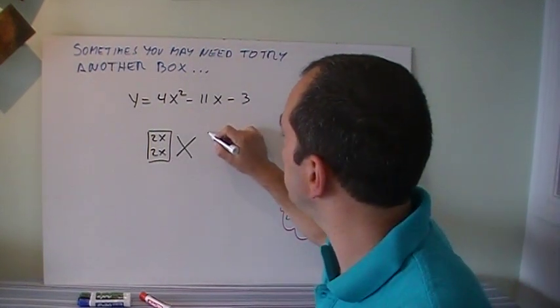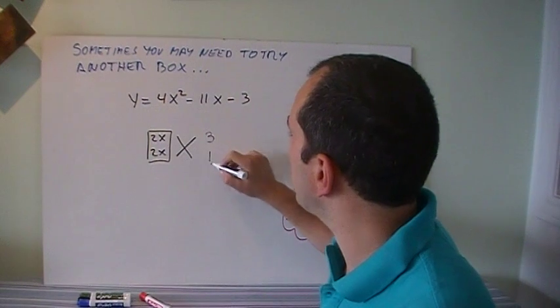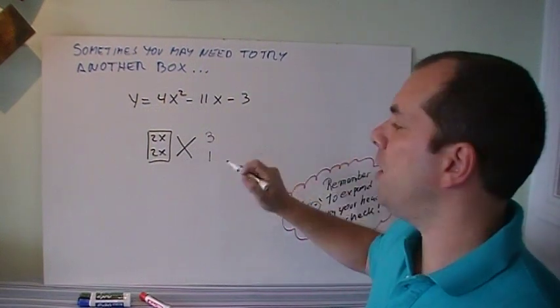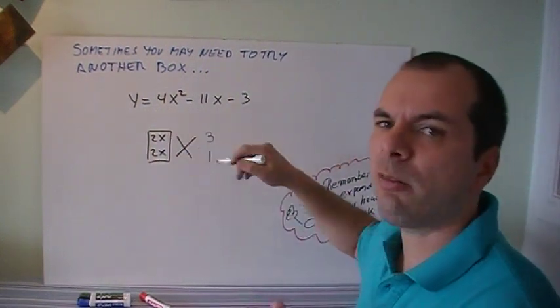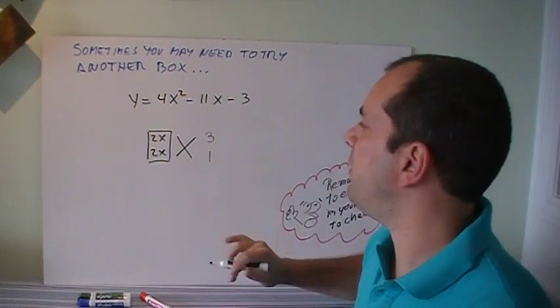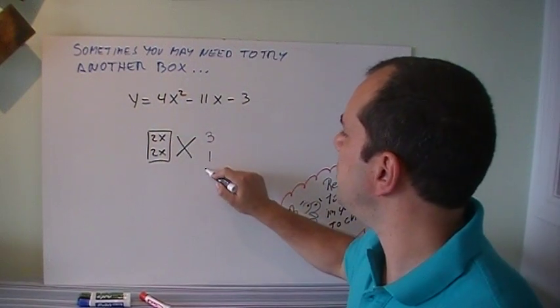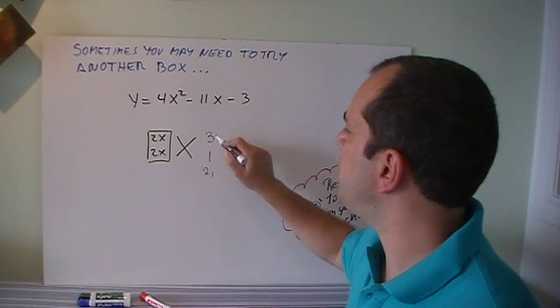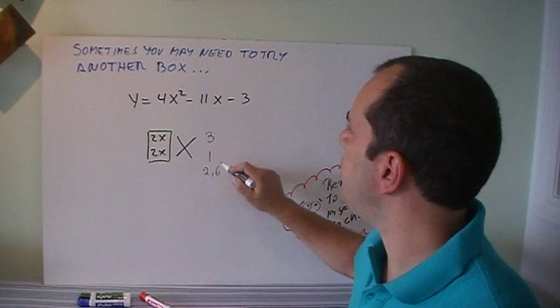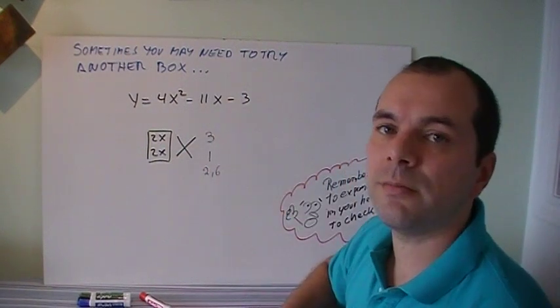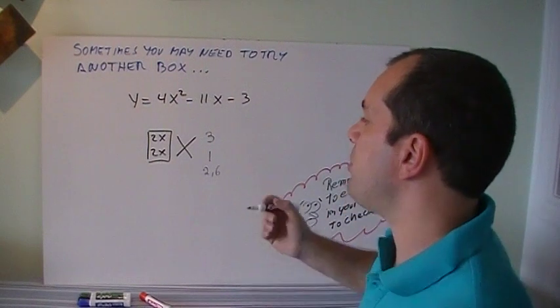And I need two numbers that multiply to 3. Well, that's easy. It's just 3 and 1. Now, I could put the 1 and 3, but since this is 2 and 2, when I cross multiply, I'm going to get the same answer. So I'm just going to do it like that. Now, 2 times 1 is 2. 2 times 3 is 6. With 2 and 6, can I make 11? No, I can't. So that was not the right box.